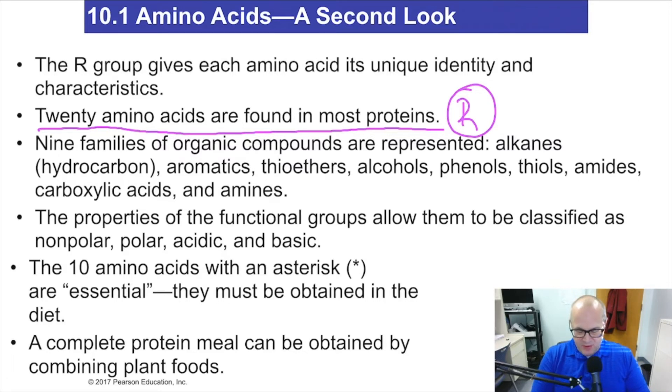Now, there's numerous families that are found in amino acids. You find alkanes, aromatics, thioethers, alcohols, phenols, thiols, amides, carboxylic acids, and amines. Didn't I tell you you had to know the classes of compounds or the families of compounds, whatever your book calls them? I told you you had to know them because it's going to make everything else easier. So hopefully you memorized them.